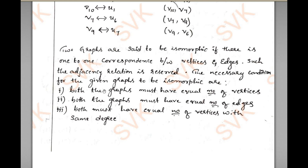The necessary conditions for the given graphs to be isomorphic are three points: first, both graphs must have an equal number of vertices; second, both graphs must have an equal number of edges; third, both must have an equal number of vertices with the same degree.